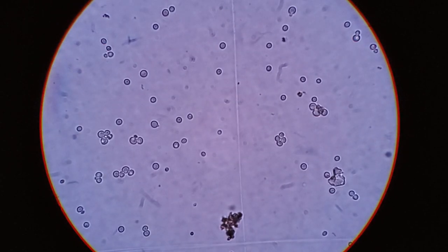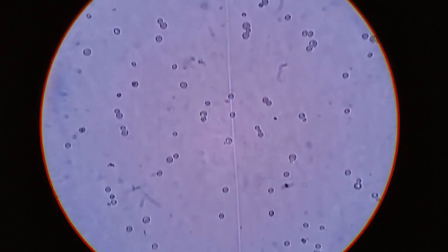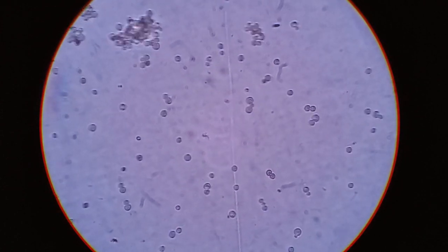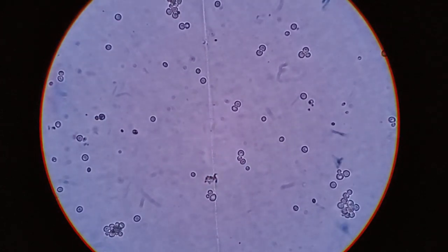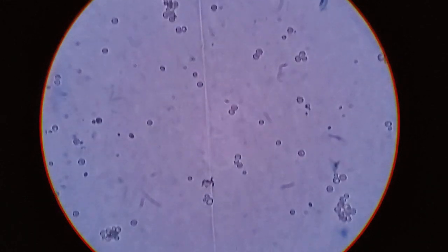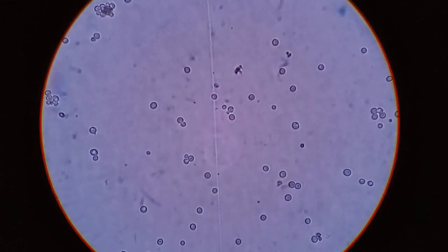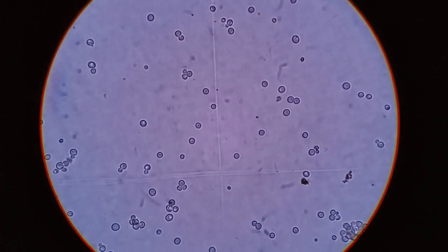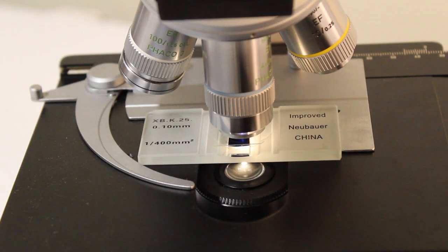So if you've stained an undiluted yeast sample you need to use a dilution factor of two because you added an equal amount of tri-pan blue and yeast. If you diluted your yeast sample 10 times before adding the tri-pan blue you're now working with a 1 in 20 dilution. So this is how to perform cell counting with a hemocytometer and how to combine it with viability staining to count only viable cells.